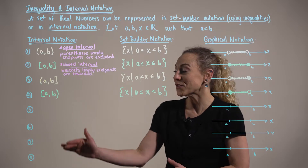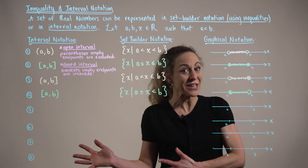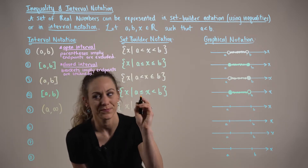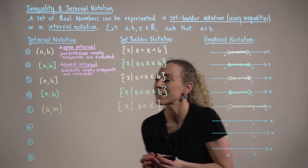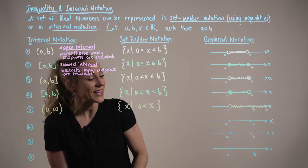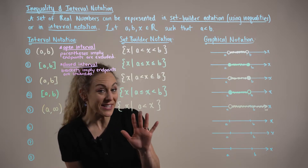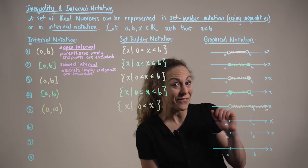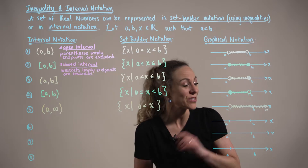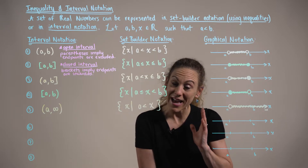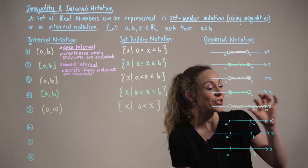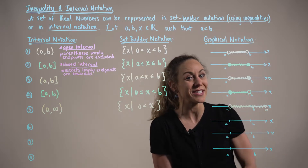The remaining four interval notations are what we refer to as infinite intervals. Here we have the set of all x values that are strictly greater than a, as shown in both set builder and graphical notation. We draw an open dot at that endpoint, implying x can get infinitely close but never equal it, and then shade the region growing in an infinitely positive direction.